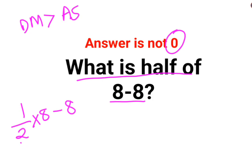So first we need to do this multiplication. Half multiplied by 8 equals 4. So we have 4 minus 8.